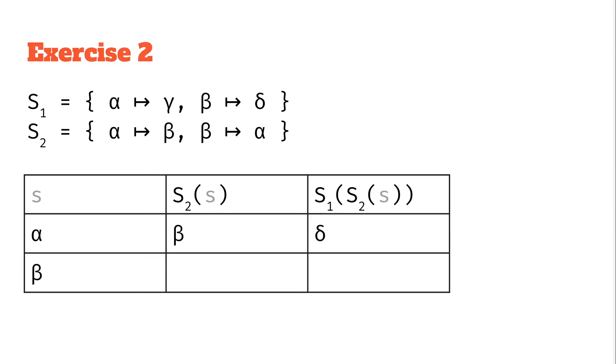Next row, let's look at that beta. Again we apply s2 on that beta. There's a mapping from beta to alpha so we'll get an alpha. You can kind of see from this table exactly how s2 is swapping alpha and beta. And then we apply s1 on that. Well s1 takes an alpha and maps it to a gamma. And so we get a gamma.